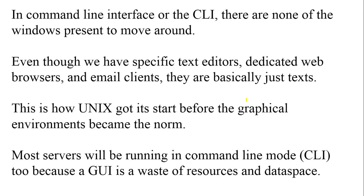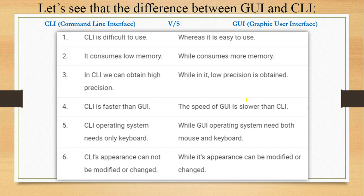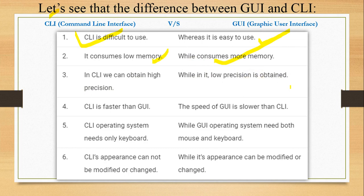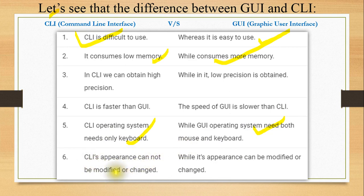Now here are a few key differences between GUI and CLI. CLI is difficult to use, whereas GUI is very simple. CLI consumes low memory; GUI consumes more memory. CLI gives high precision; GUI gives low precision. CLI is faster than GUI. CLI only needs a keyboard; GUI needs a monitor and mouse as well.